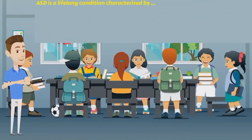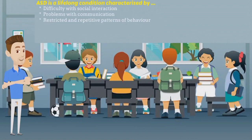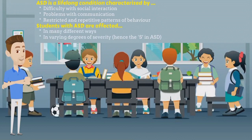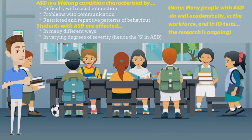Autism Spectrum Disorder is a lifelong neurodevelopmental disorder characterised by difficulties in social interaction, communication and restricted and repetitive patterns of behaviour, interests or activities. It is a condition that affects individuals differently and to varying degrees of severity. Many people with ASD do well academically, in the workforce and in IQ tests.